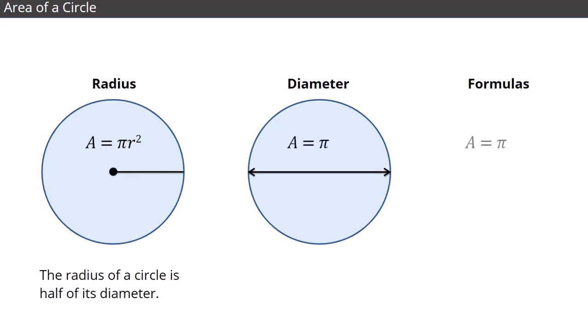We replace r with the diameter divided by 2. We then square d over 2 and multiply that result by pi. This leaves us with the area being equal to pi times the diameter squared, all divided by 4.